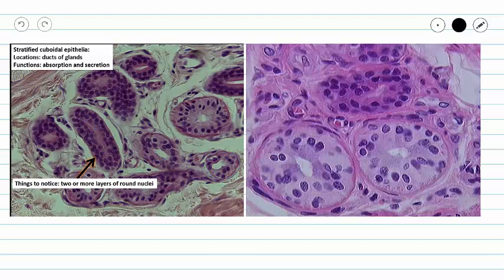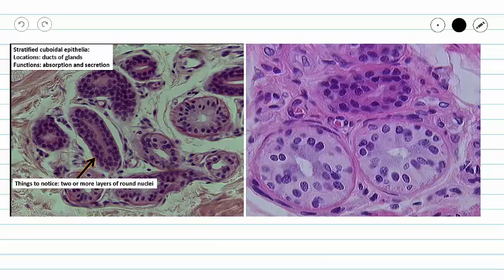Here in this picture, we're seeing another view of stratified cuboidal epithelium. And you can see we have those nice round nuclei, but we have multiple layers of cells.